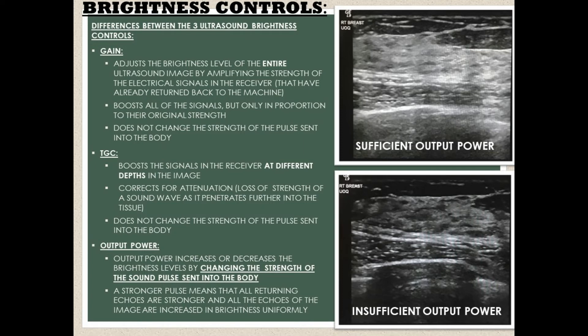Output power increases or decreases the brightness levels by changing the strength of the sound pulse sent into the body. And just like gain, it changes the brightness of the entire image. A stronger pulse sent into the body means that all returning echoes are stronger, and all the echoes of the image are going to be increased in brightness uniformly.